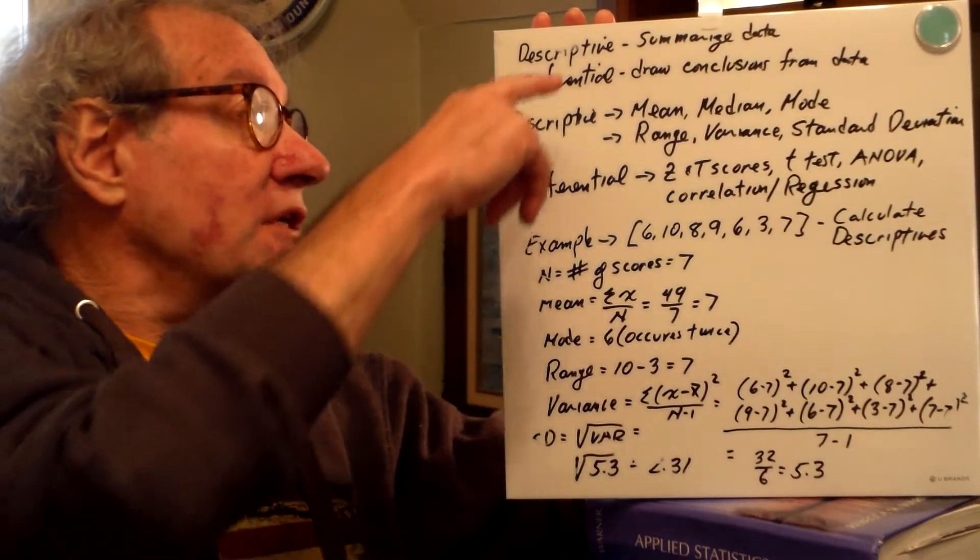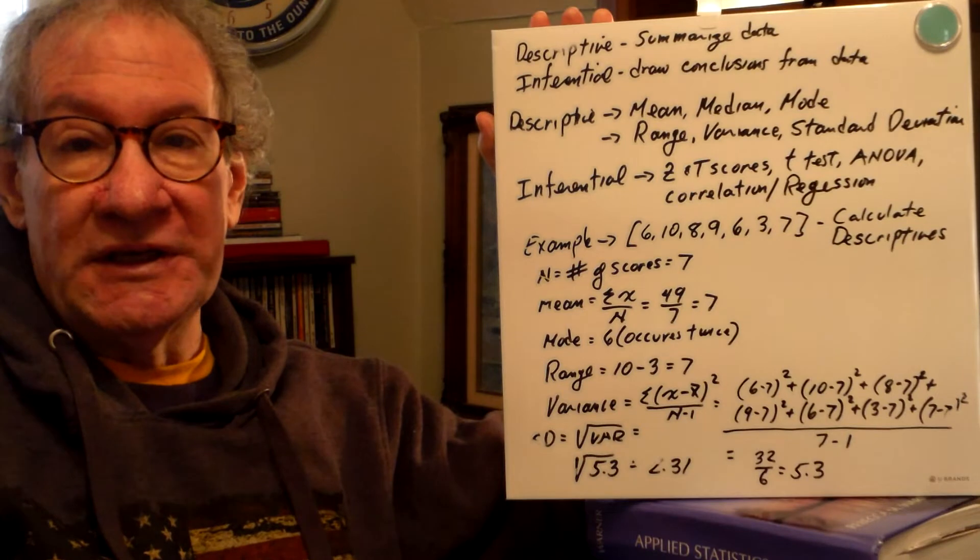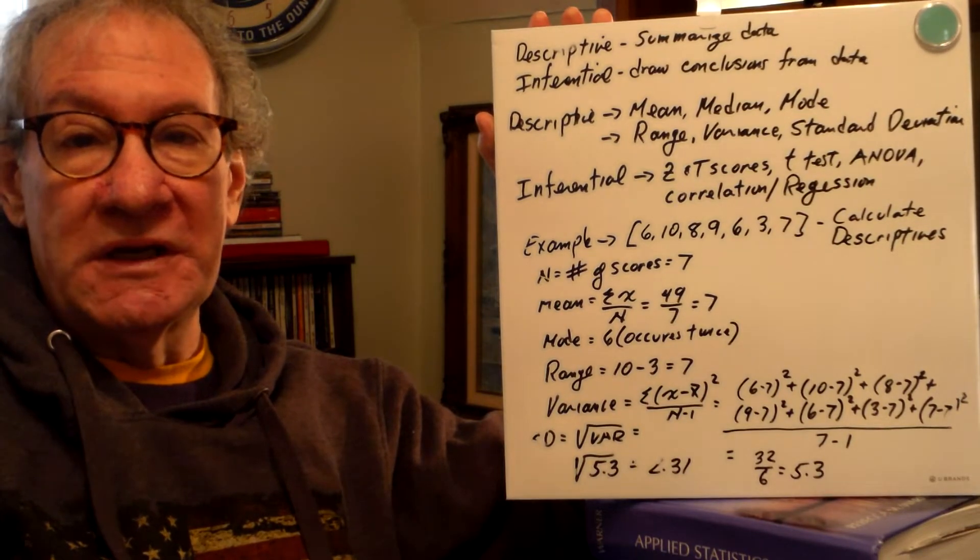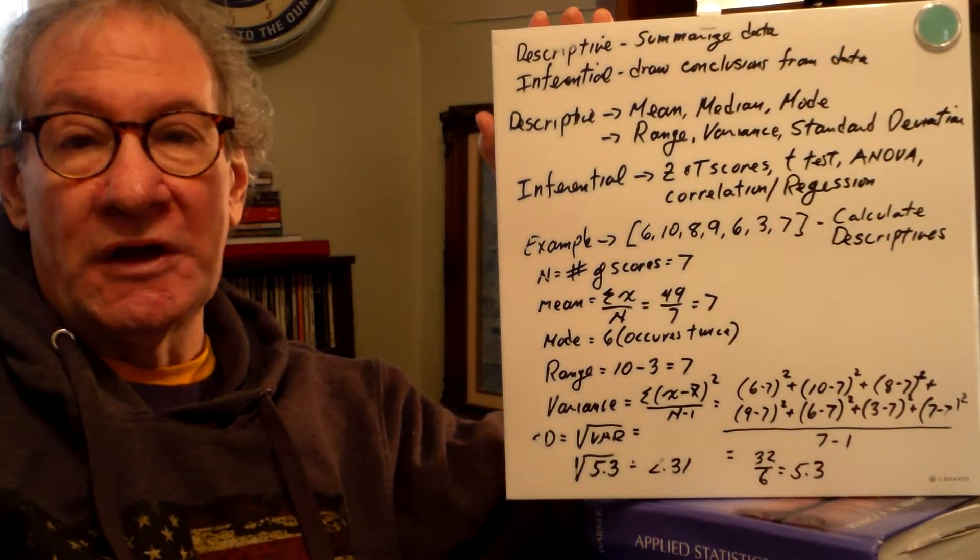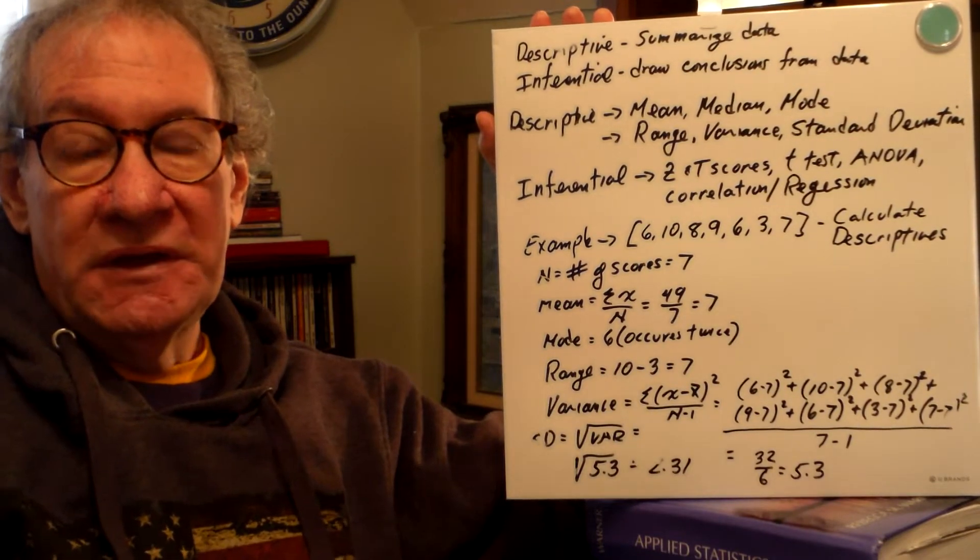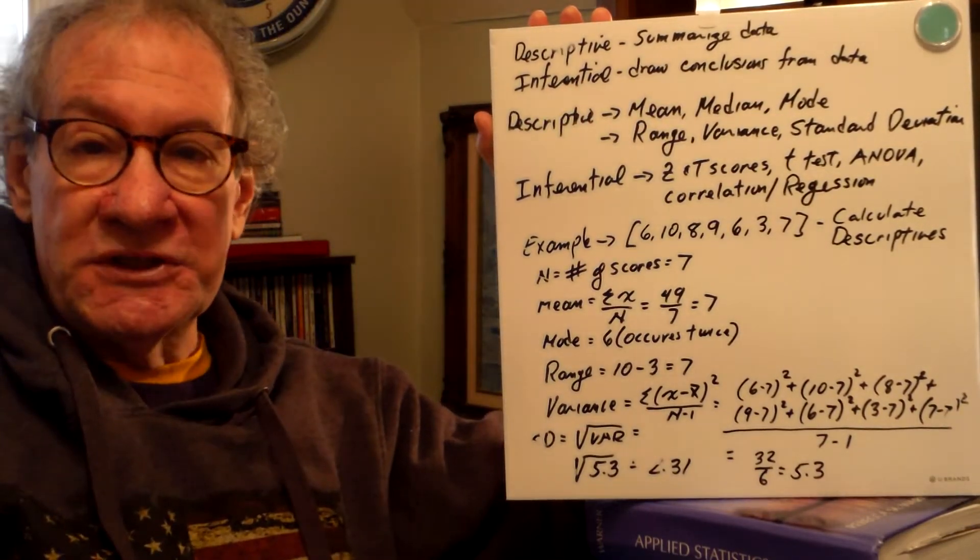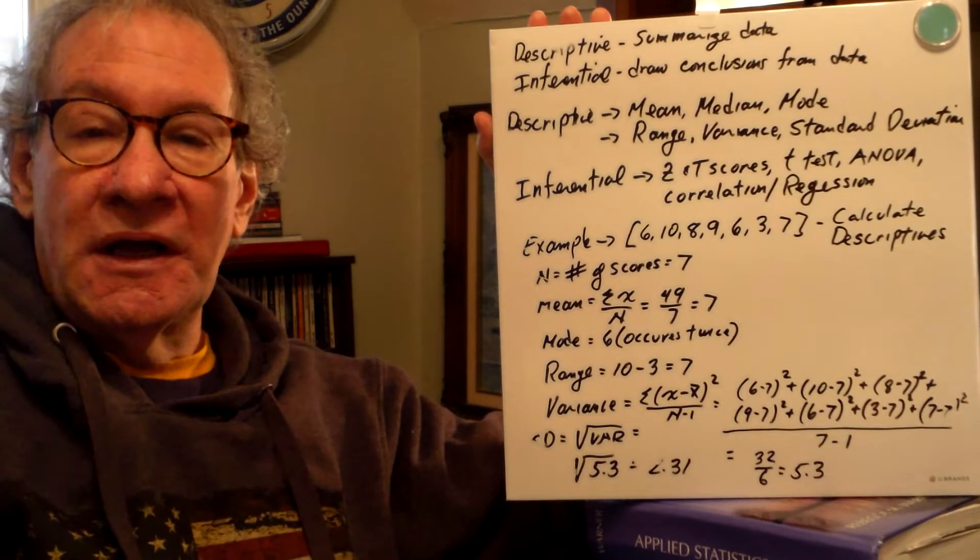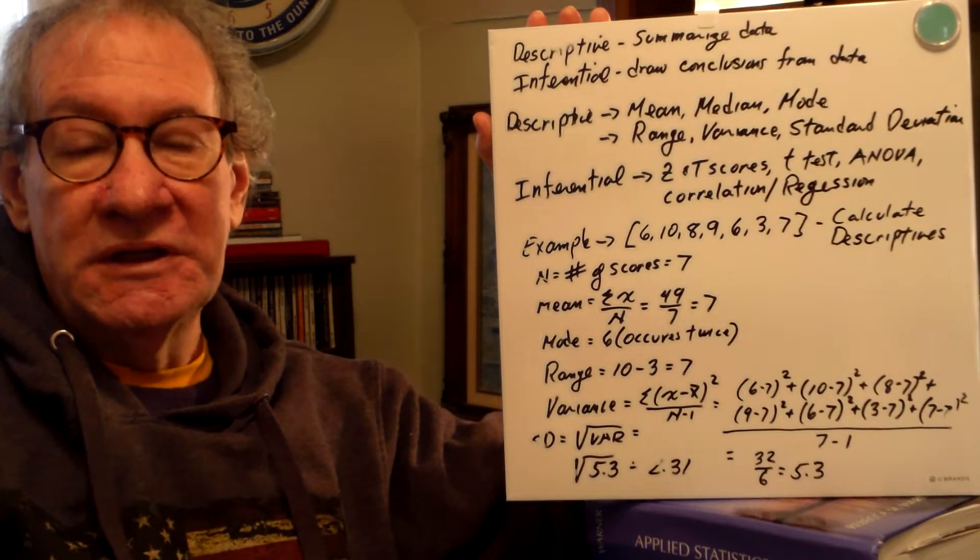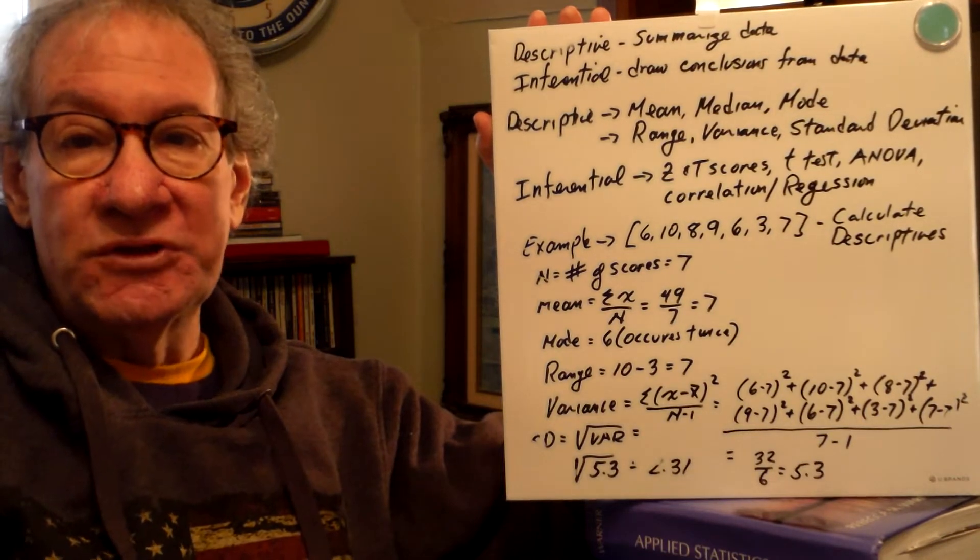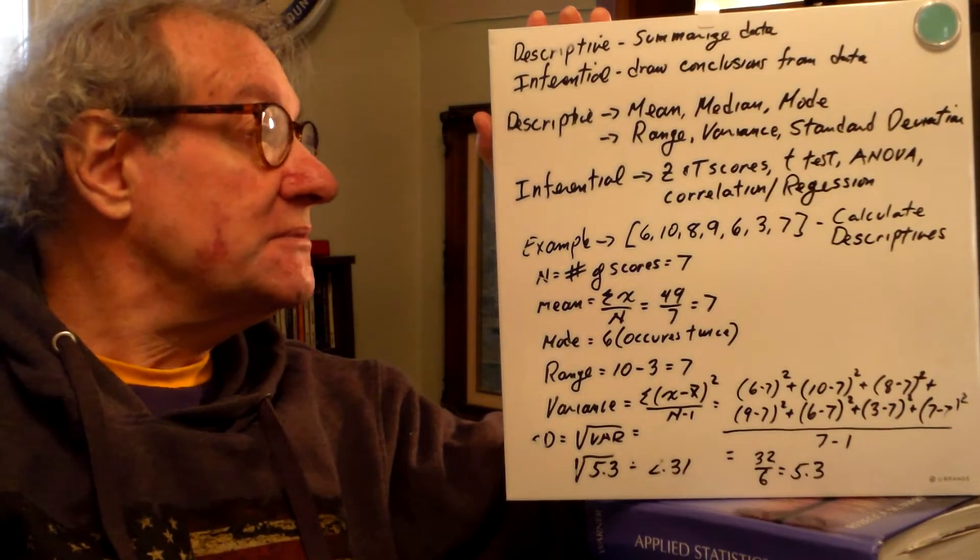So to begin with we have to understand the difference between descriptive and inferential statistics. Descriptive statistics simply summarize data. Like if we had a classroom with men and women in it, how many men are there? How many women are there? What percent of the total is female? Things of that nature. We're not drawing any conclusions, we're just telling what we have. Inferential statistics, on the other hand, is where we actually use the data to make decisions. So for instance, if there's men and women in the room, are there a significantly different number of Democrats than Republicans? In other words, does political party depend upon gender? We're using information to go beyond the description of the data to what the data seems to be telling us.